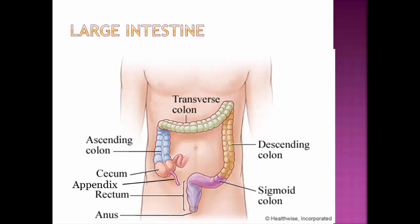The large intestine is divided into two different parts. The part where the small intestine is attached is called the cecum — you can see a little fragment of the small intestine here. Food or leftovers will enter into the large intestine at the cecum, then travel up the ascending colon.